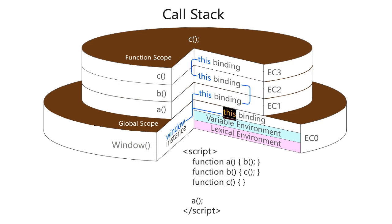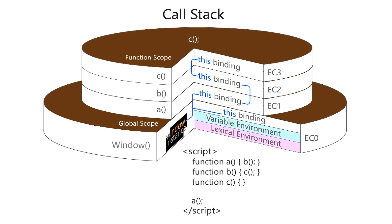If you have function constructors executed using the `new` operator, then this chain would be broken — the `new` operator creates its own context. When you create constructors, they totally own the `this` object, and if you call any functions from that constructor, they would inherit whatever `this` is at that time. But if you're just calling functions within the global scope starting from the first one into b, c, and so on, you will retain the original global scope binding of `this`.